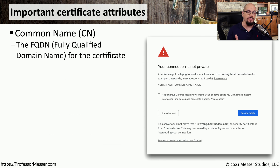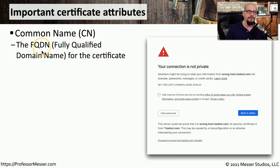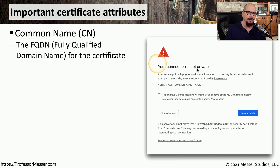An important attribute on the certificate is the common name or CN. This is the fully qualified domain name associated with this certificate. So on my site, it would be ProfessorMesser.com or www.ProfessorMesser.com. If you're connecting to a site and that common name in the certificate doesn't match the name that you put into your browser address bar, you'll get a message saying your connection is not private.